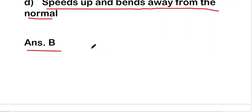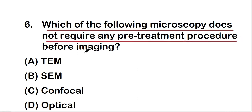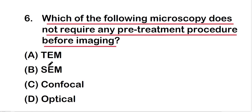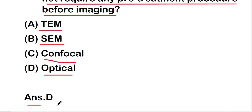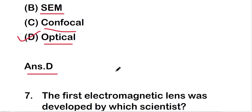Which of the following microscopy does not require any pre-treatment procedure before imaging? The options are TEM, SEM, confocal microscope, or optical microscope. The right answer is option D — optical microscope. The optical microscope does not require any pre-treatment procedure before imaging, whereas TEM, SEM, and confocal microscopes require pre-treatment of the object.